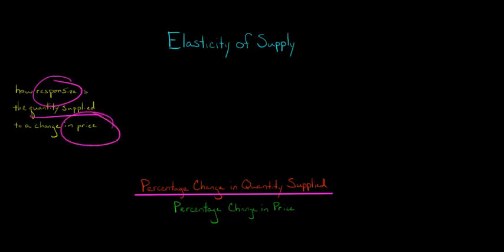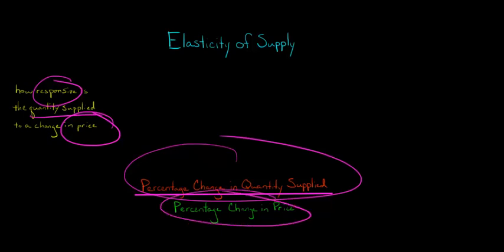If the price of oil goes up by 5%, what happens to the percentage change in the quantity supplied of oil? How do oil producers respond? We calculate by taking the percentage change in the quantity supplied and dividing it by the percentage change in the price of the good.